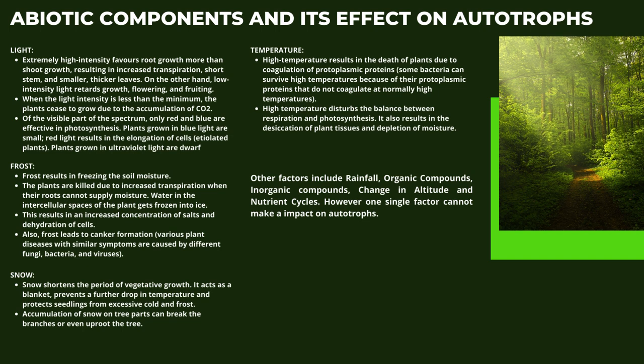Finally, temperature: high temperature results in the death of plants due to coagulation of protoplasmic proteins. Some bacteria can survive high temperatures because their protoplasmic proteins do not coagulate at normally high temperatures. High temperature also disturbs the balance between respiration and photosynthesis, and results in the desiccation of plant tissues and depletion of moisture. Other factors include rainfall, organic compounds, inorganic compounds, change in altitude, and nutrient cycles.